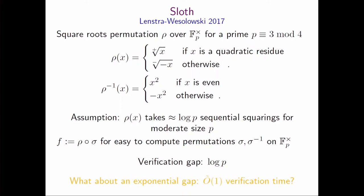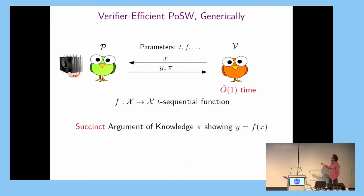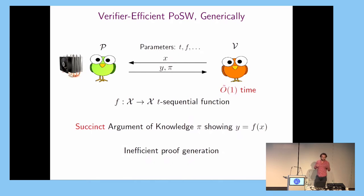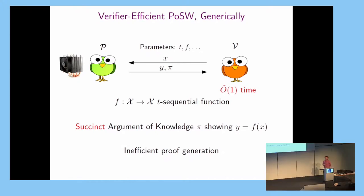Someone might say: if you already have a sequential function like a hash chain, you could just compute the result and throw a SNARK on it. That's great — the proof is small and the verifier can verify it quickly — but now the prover is not happy. It has to do extra work to generate this proof, and in its generality this is not practical. It can be, depending on what functions and SNARKs you use, but in general it's not clear you can use it in practice.